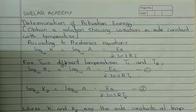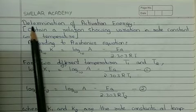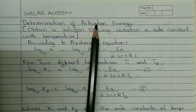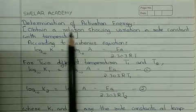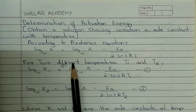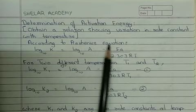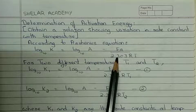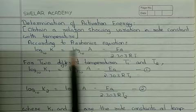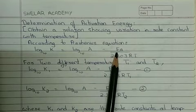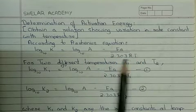The next part is the application of the Arrhenius equation. The very important application is that it helps us determine activation energy — which we will now see. Determination of activation energy can also be stated as a relation showing variation in rate constant with temperature; the derivation is the same for both. We again use: log₁₀ K equals log₁₀ A minus Ea upon 2.303RT, where K is rate constant, A is pre-exponential factor, Ea is activation energy, R is molar gas constant, and T is absolute temperature.